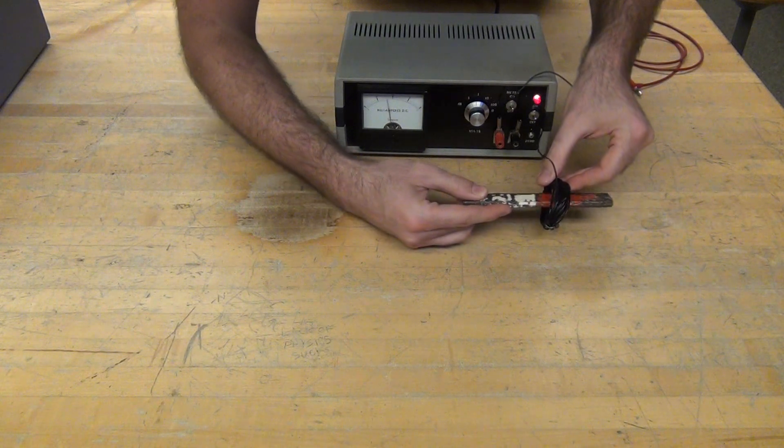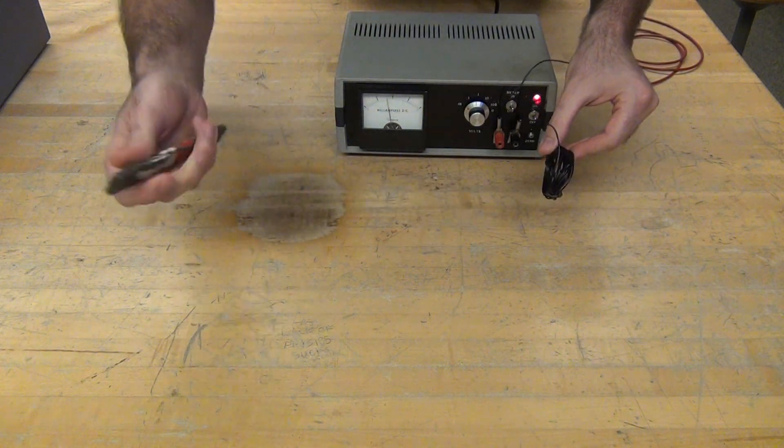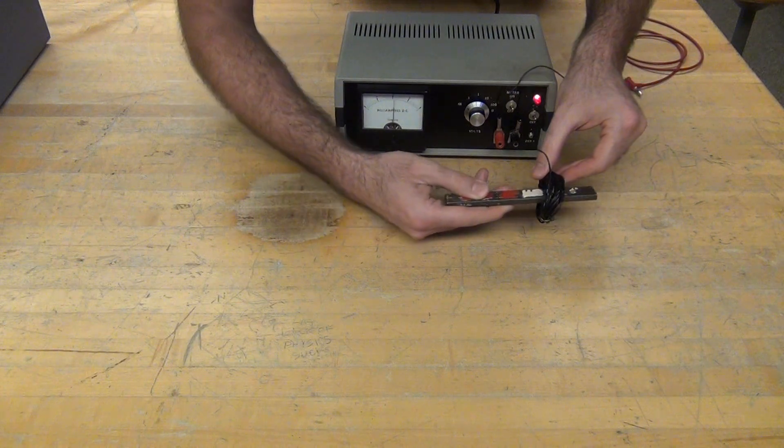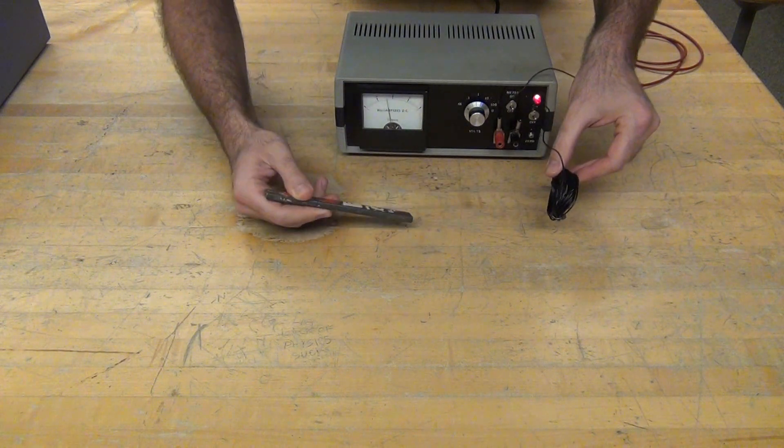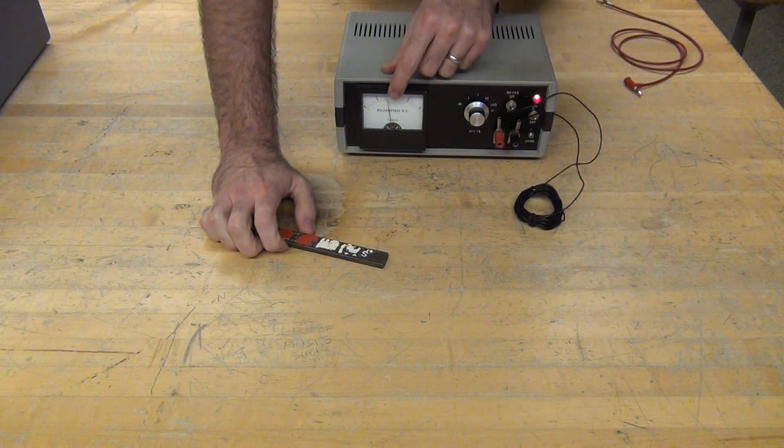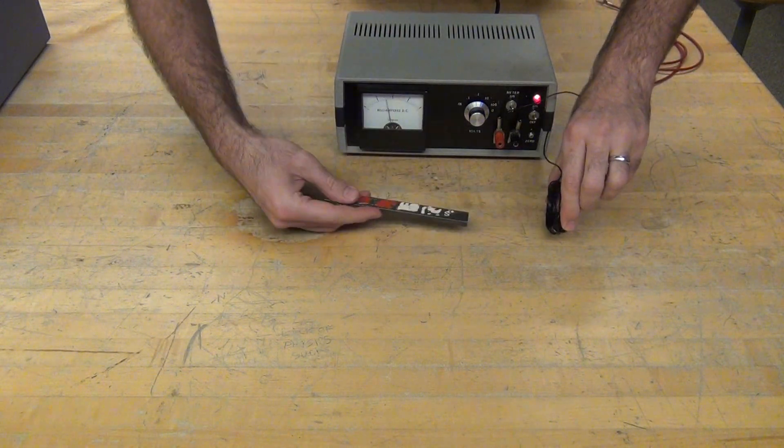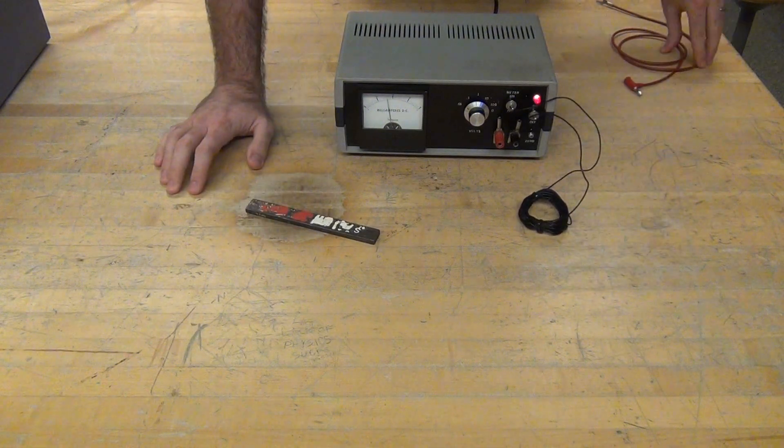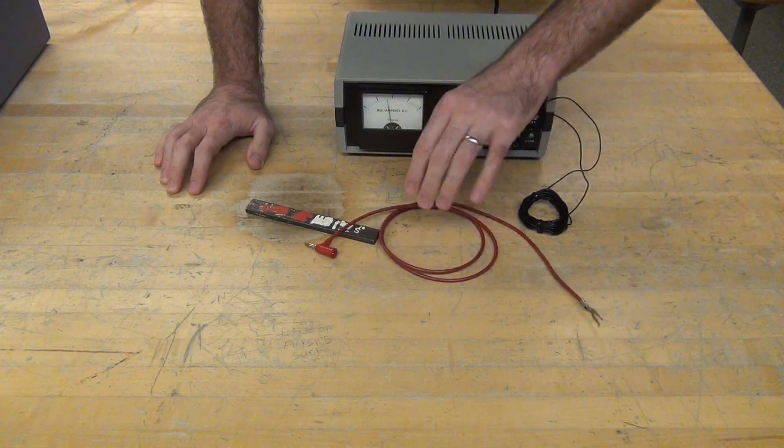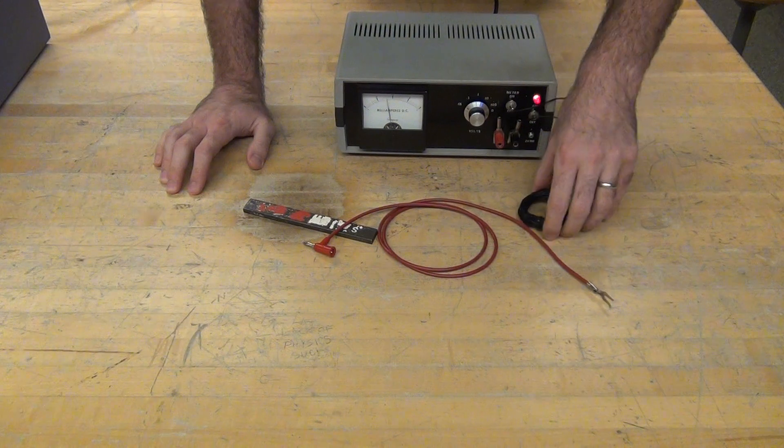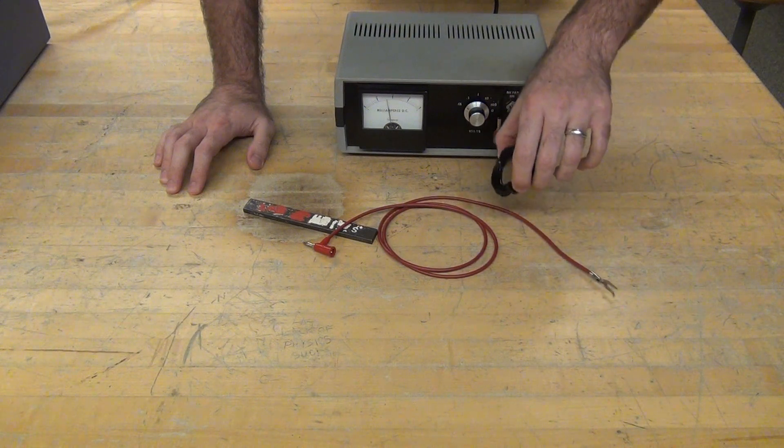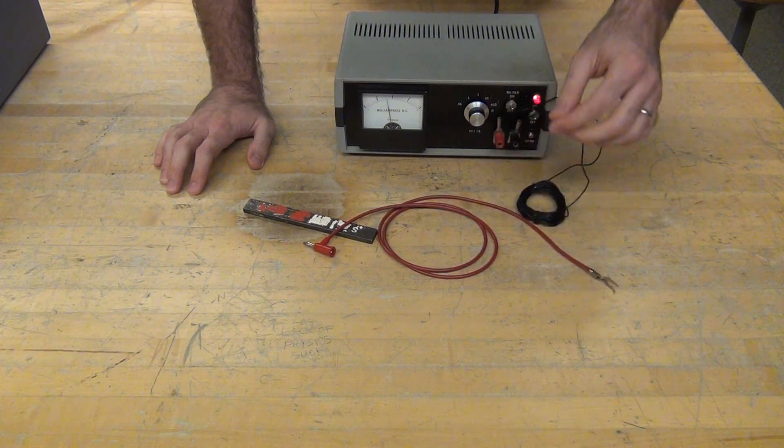I want to explore different speeds, different ends, and note what happens to the current that I'm measuring as I move the magnet in and out of the coil. Start with the loose wire, and then step up to the big coil, and spend most of your time investigating the big coil.